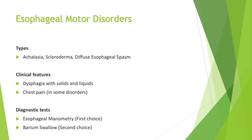Motor dysfunction could include achalasia, scleroderma, and diffuse esophageal spasm. Clinical features include dysphagia with solids and liquids, which could be intermittent or progressive, and chest pain can be present in some cases. Diagnostic tests could include esophageal manometry as the first and gold-standard choice, with barium swallow as the second option.